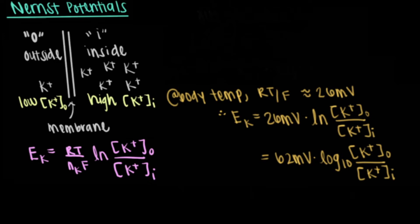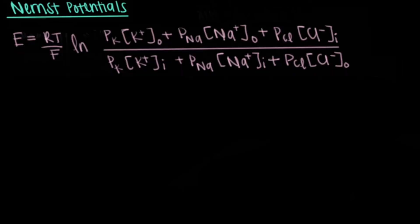More realistically, cell membranes depend on permeabilities of a lot of different ions. In this case, the potential can be given by the Goldman-Hodgkin-Katz equation, where E equals RT divided by F times the natural log of the concentrations of potassium, sodium, and chlorine.